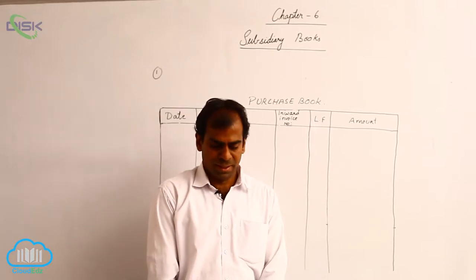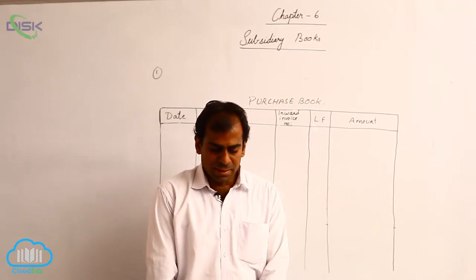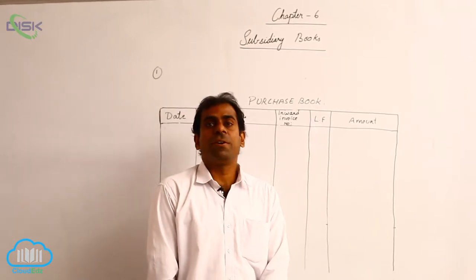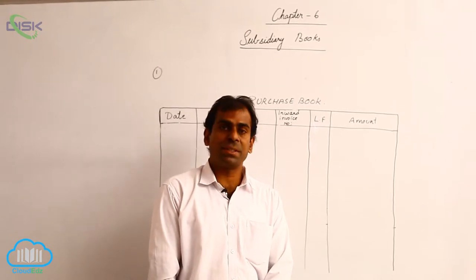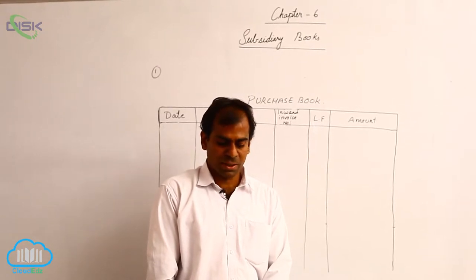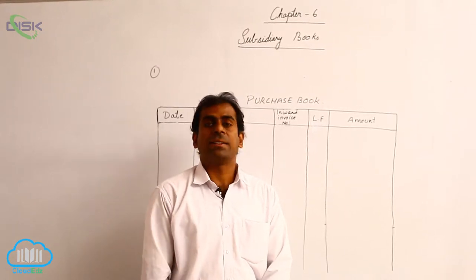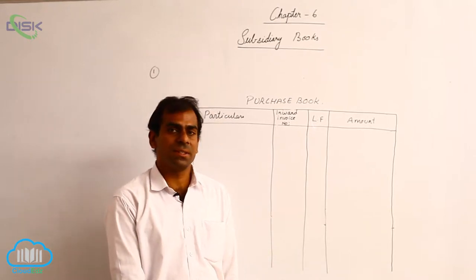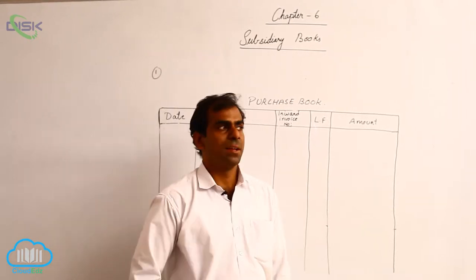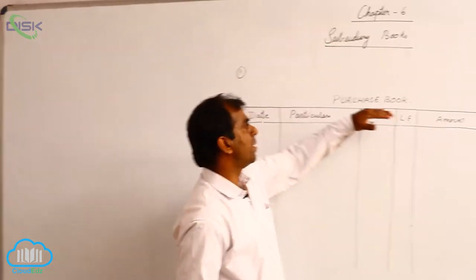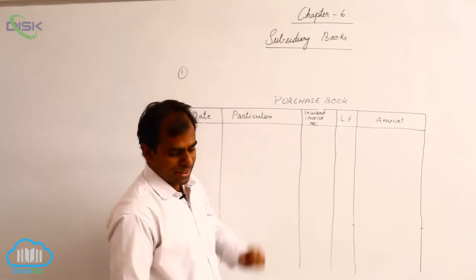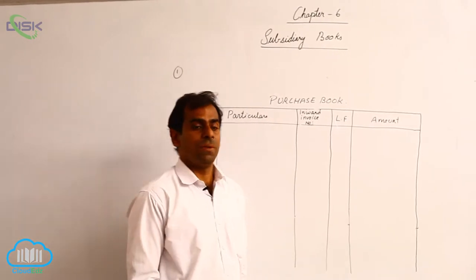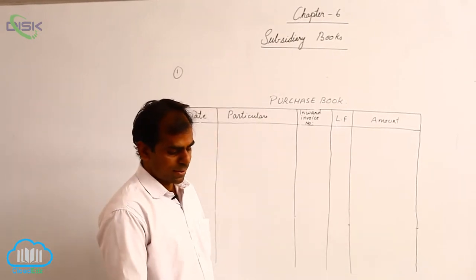First problem: subsidiary books. Record the following transactions in the purchase book. The transactions are given for the month of March 2013. We have the format of the purchases book here and we will see how we will record these transactions.